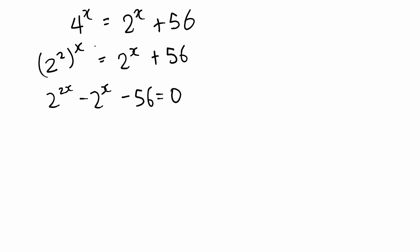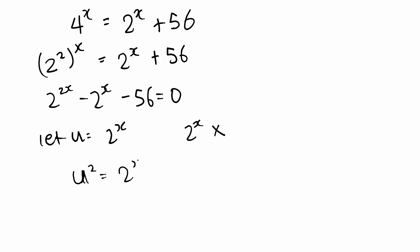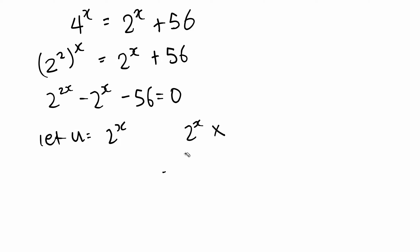You notice anything? We have 2 to the power of x in common. So we can say: let u equal 2 to the power of x. Well, 2 to the power of 2x is simply u squared, because if u equals 2 to the power of x, then u squared equals 2 to the power of x, all squared, which is 2 to the power of 2x. So the first section of our equation becomes u squared, and since 2 to the power of x becomes u: minus u minus 56 equals 0.